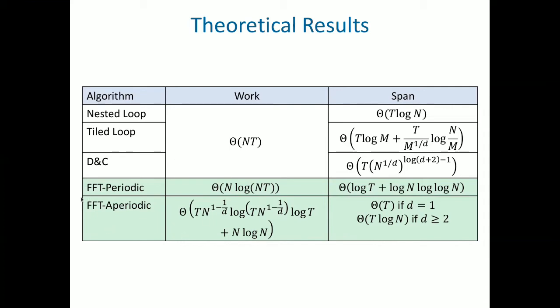So to repeat, our periodic algorithm shows an exponential speed up in time complexity, or rather in complexity in this variable t over all known alternatives. And our aperiodic algorithm provides a polynomial speed up over all known alternatives.